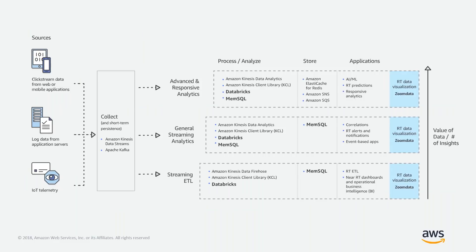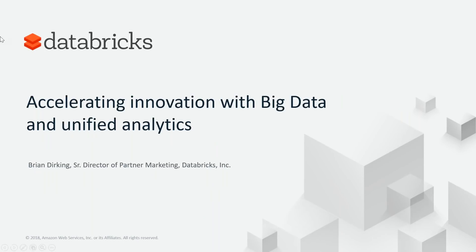As we go through the partner presentations, it's helpful to understand where in the stack each partner plays. On the left-hand side you have the pattern: data producers, then durable storage for collecting that data like Amazon Kinesis Data Streams and Apache Kafka. Many of our partners offer solutions for durable storage as well as processing and analyzing, each with their own value proposition for how you can build real-time analytics solutions on AWS. With that, I'll pass it to Brian from Databricks, who'll talk about accelerating innovation with big data and unified analytics.